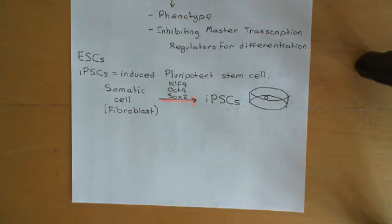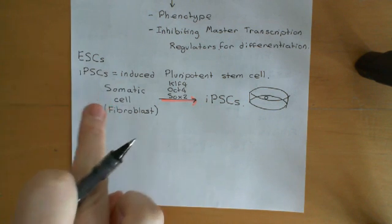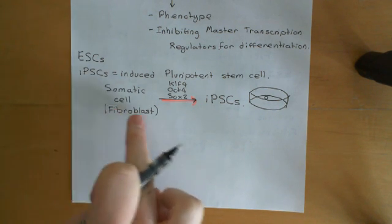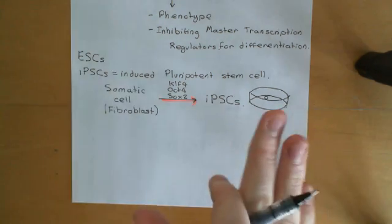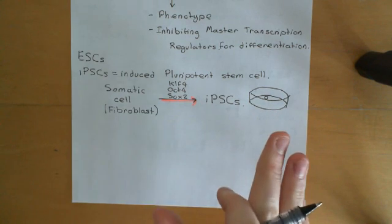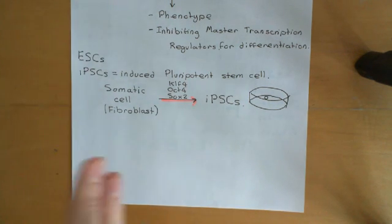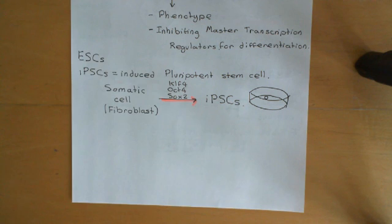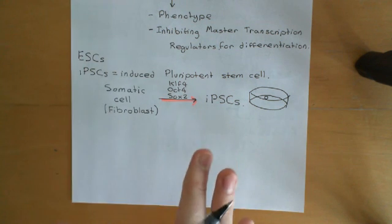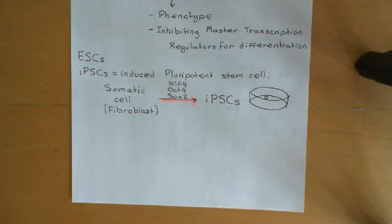What's lovely about this is you can do it from a somatic cell of an adult human, so we get around the ethical issues of having to take embryonic stem cells from embryos, which many people object to.